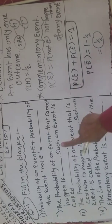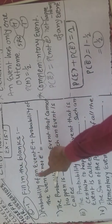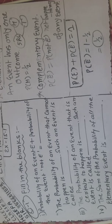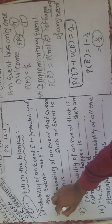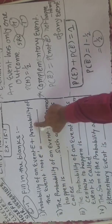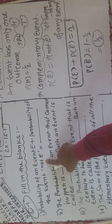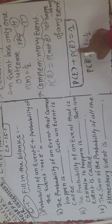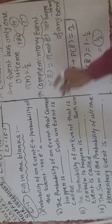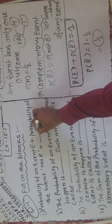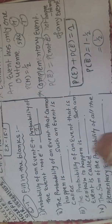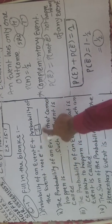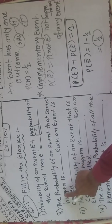Now Exercise 15.1, pehla question hai fill in the blanks. First: probability of an event E plus probability of event not E — maine peeche aap logo ko bataya tha — probability of event happening or not happening ka sum always kya hoga? One. Toh iska answer aayega one.